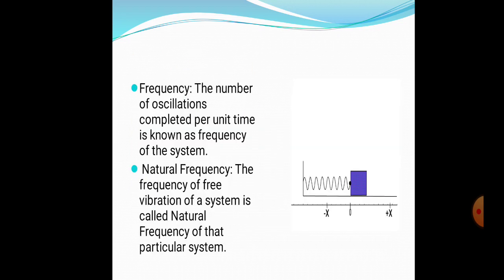Now, some basic concepts: frequency is the number of oscillations completed per unit time. In the spring-mass system shown, after application of an initial force the mass oscillates, and this number of oscillations per unit time is the frequency. The frequency of free vibration of such a system is called the natural frequency — the frequency at which the system vibrates after the initial force is released.